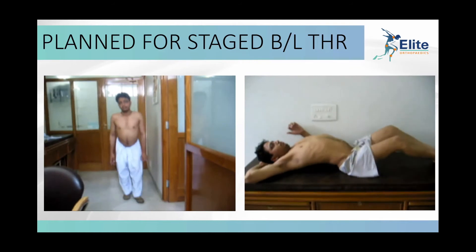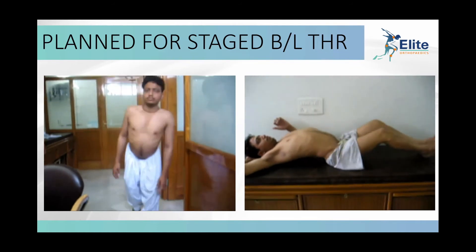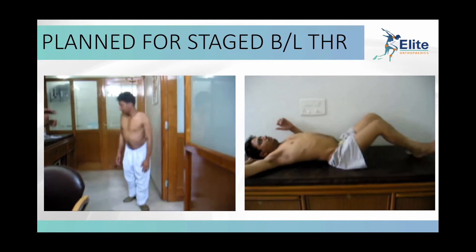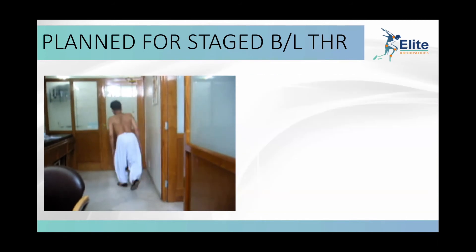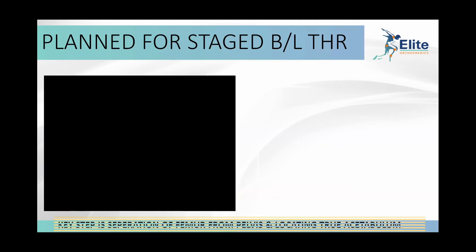While walking, the hips are totally fused in flexion with compensatory lumbar lordosis and forward flexed pelvis. This is very important to identify what kind of position to fix. The key surgical steps were separation of the femur from the pelvis and locating the true acetabulum to avoid any malrotation of the acetabular component.